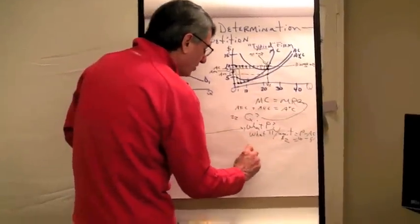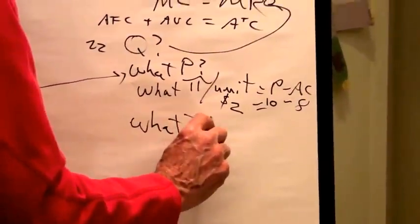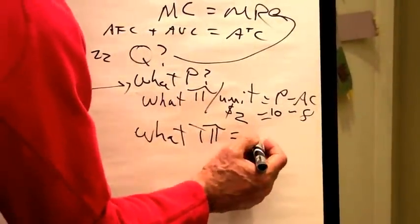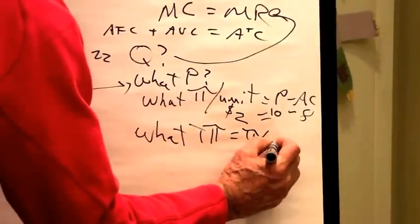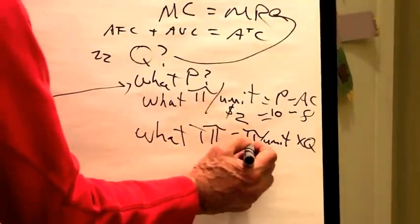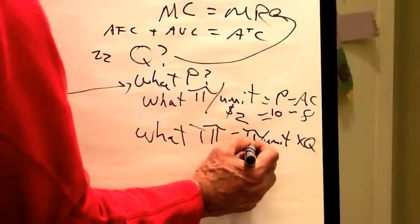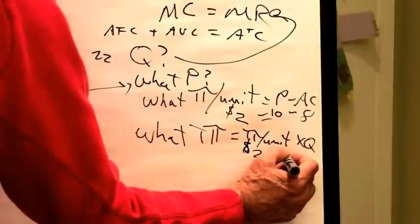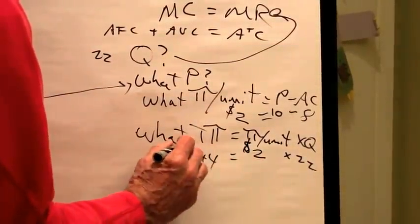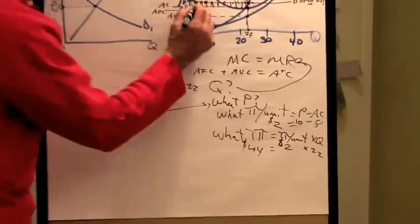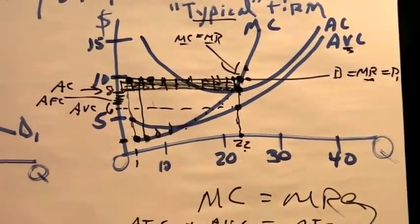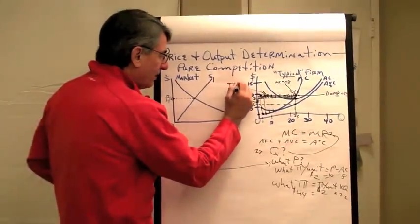Total profit equals profit per unit times quantity produced. In this case they're making $2 on each unit and producing 22 units, which means the total profit will be $44. This area right here — 2 times 22 — represents total profit.